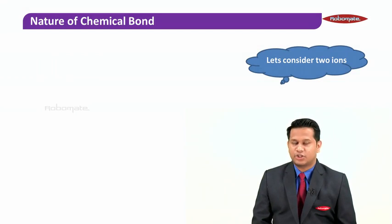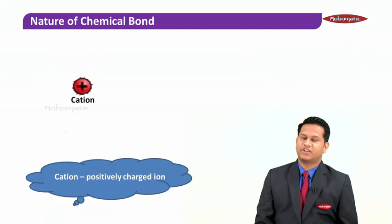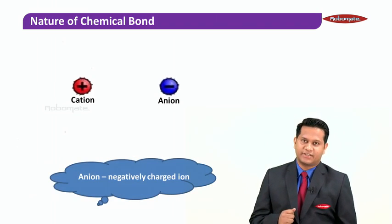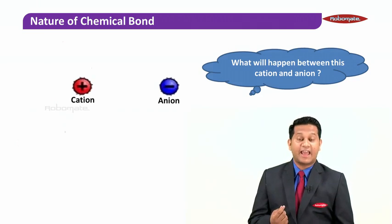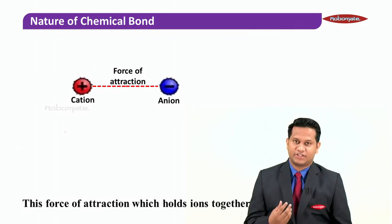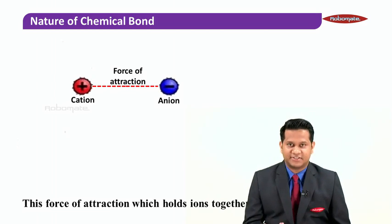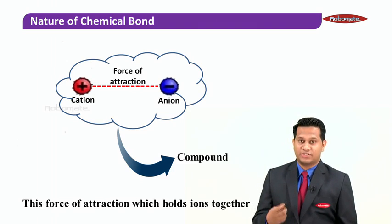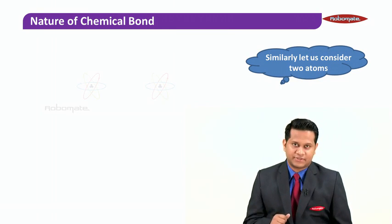To understand chemical bond, let us consider two ions. The first one is a cation, and a cation is a positively charged ion. The second one is an anion, and anions are negatively charged ions. Between this cation and anion there will be some force of attraction, which holds the two ions together to form something called a compound. This force of attraction which holds the ions together to form a compound is called a chemical bond.